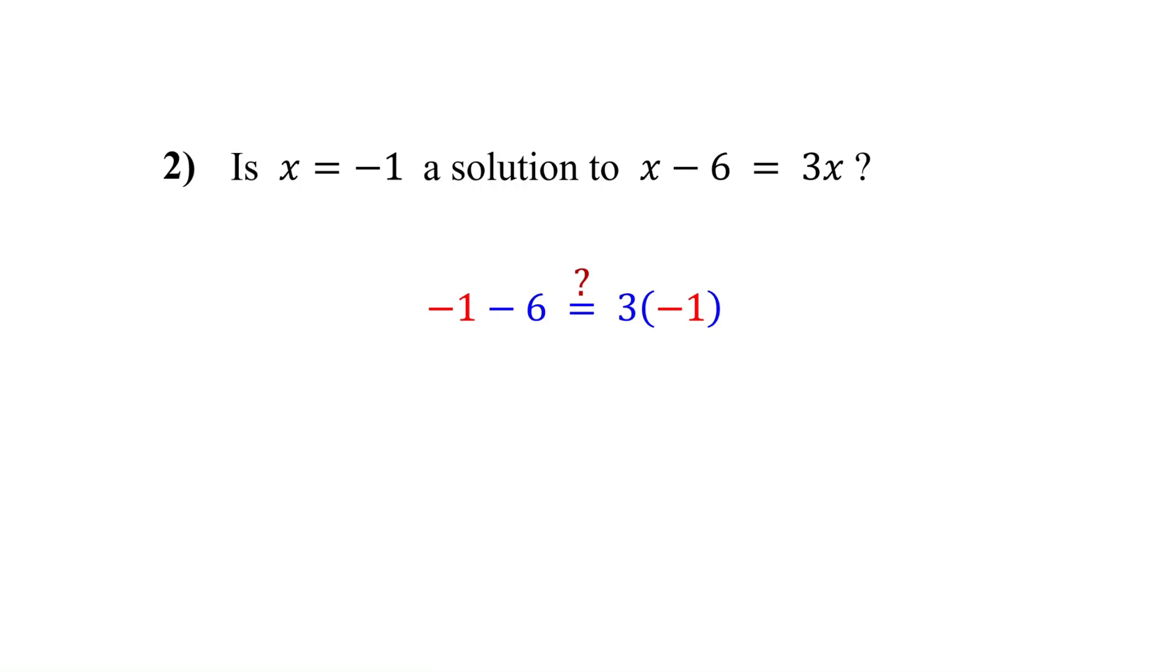On the left, negative 1 minus 6 is negative 7. On the right, 3 times negative 1 is negative 3. Since both sides are not equal, x equals negative 1 is not a solution to the equation.